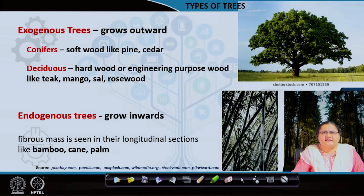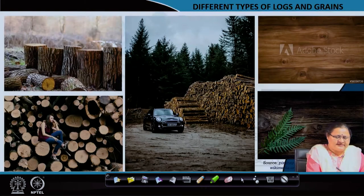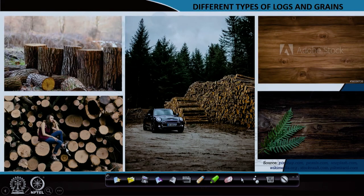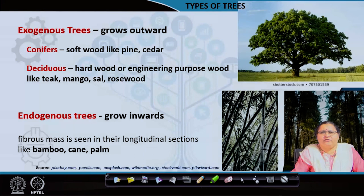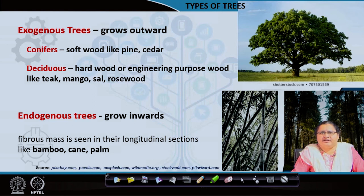The conifers have a pale color and are actually softwood - pine, cedar, fir, birch. Whereas deciduous cross sections are not so light in color; they are a little more brown and are used mostly for engineering purposes. Do conifers have no use? No - they can go for furniture and interior items.